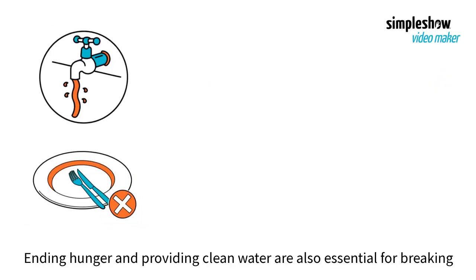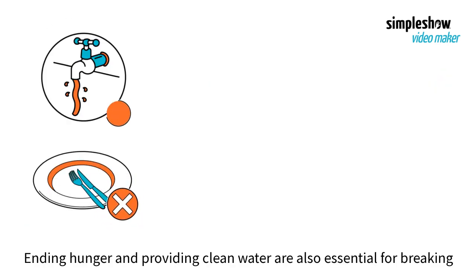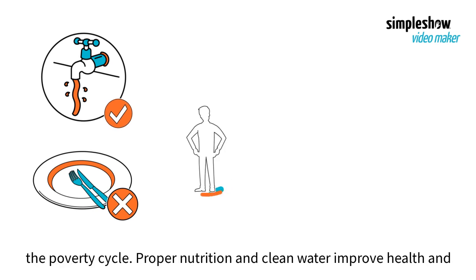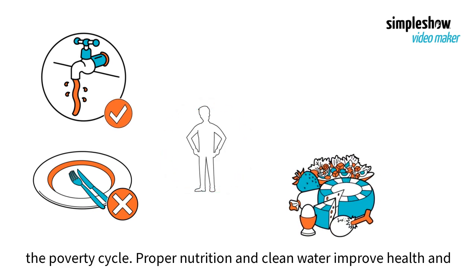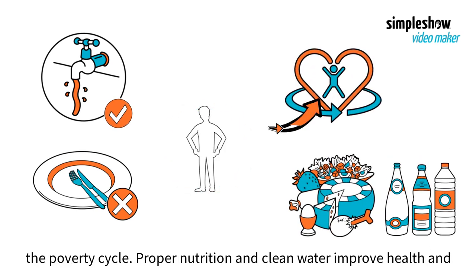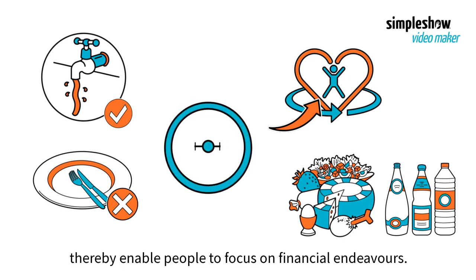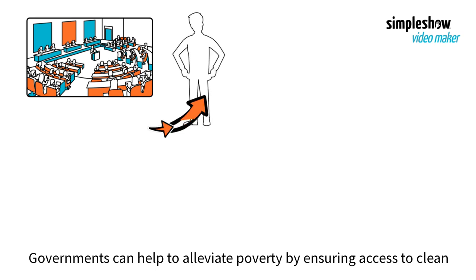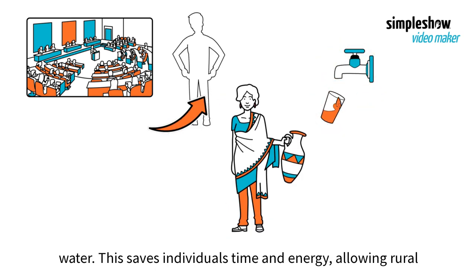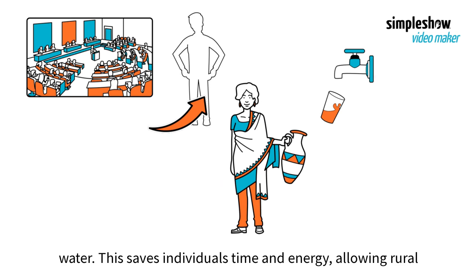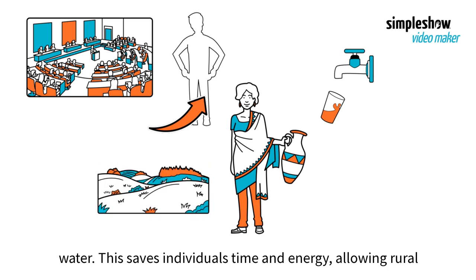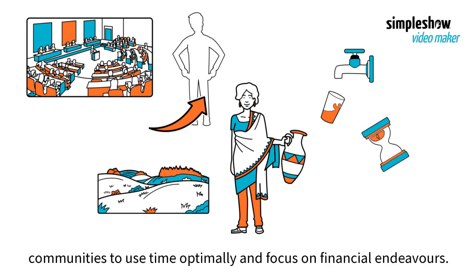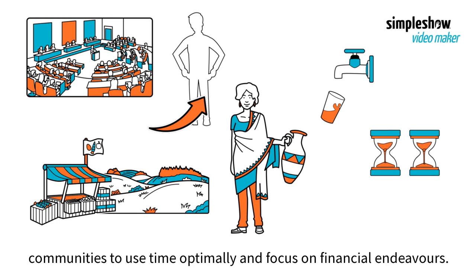Ending hunger and providing clean water are also essential for breaking the poverty cycle. Proper nutrition and clean water improve health and thereby enable people to focus on financial endeavors. Governments can help to alleviate poverty by ensuring access to clean water, saving individuals time and energy, allowing rural communities to use time optimally and focus on financial endeavors.